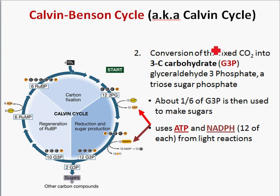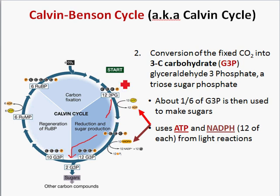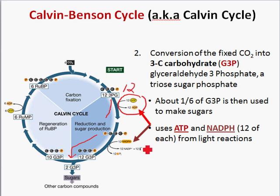The second phase of the Calvin cycle takes the intermediates — after CO2 has been joined — and converts them into products that will become sugar. This is the conversion of CO2 into sugar precursors inside the plant. Crucially, this requires lots of ATP: 12 ATPs and 12 NADPHs are needed. The ATP provides energy and the NADPH provides the electrons required to build the sugar.